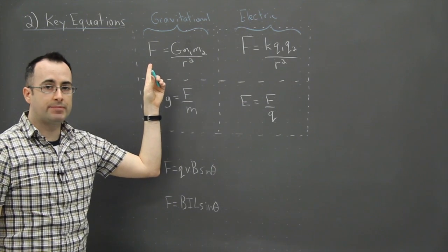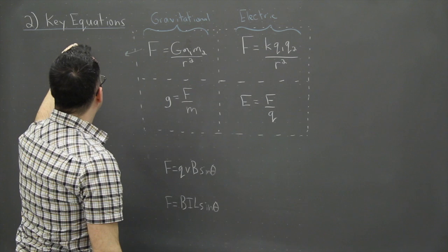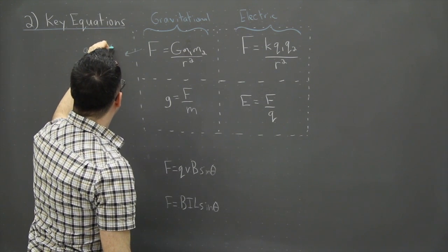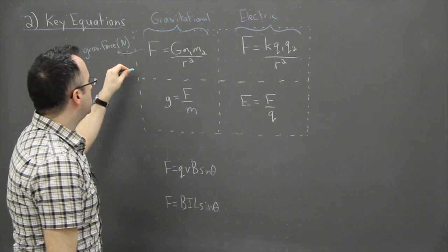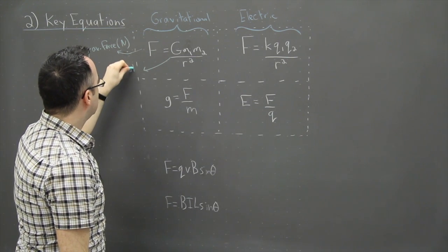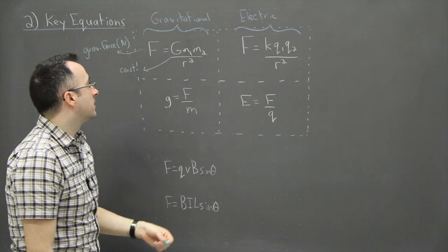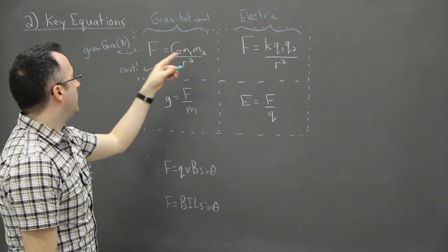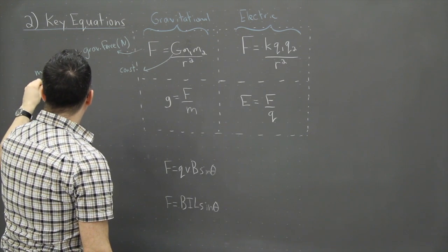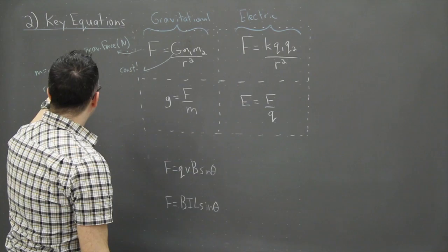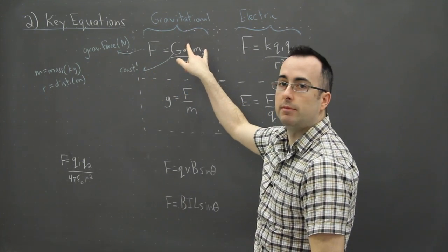This one right here is one of the most commonly known — it's Newton's universal law of gravitation. F is the gravitational force, measured in newtons. G is just a constant — a number you can look up in your data booklet: 6.67 × 10⁻¹¹ with some units. m₁ and m₂ are masses measured in kilograms, and r is the distance between the objects, measured in meters.